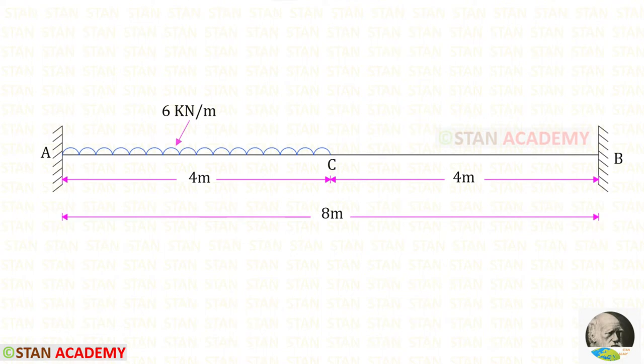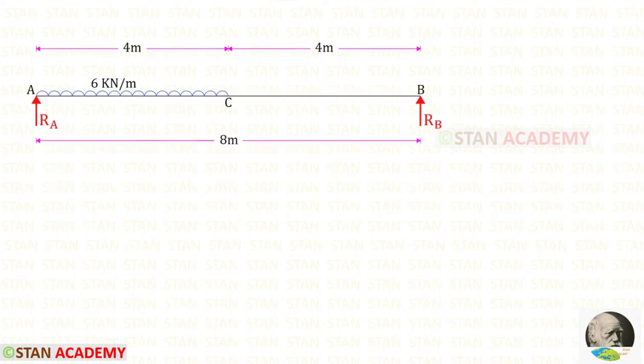For that we are going to use the moment area method. In the moment area method, first we have to draw the Mμ diagram. To draw that diagram we have to convert this fixed beam into a simply supported beam. You can see that I have converted the fixed beam into a simply supported beam.